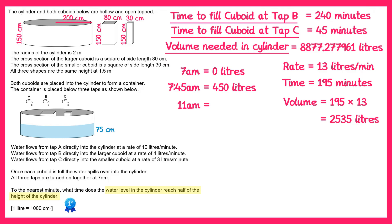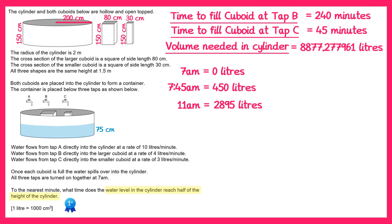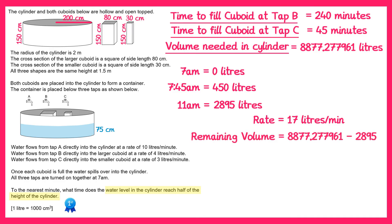Adding this to the 450 litres already inside the cylinder, at 11am there'll be 2895 litres inside the cylinder. At this point both cuboids are full, so from now on all three taps are putting water directly into the cylinder, giving a new rate of 17 litres per minute. The total volume needed was 8,877.277961 litres, and we currently have 2895 litres, so the remaining volume is 8,877.277961 minus 2895, which gives 5,982.277961 litres.